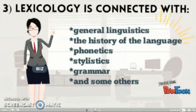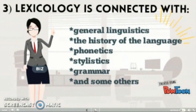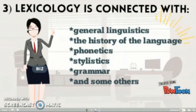If we take as an example any simple word, for example the word 'desk': from the point of view of phonetics, the word 'desk' has some sounds, so it is related to phonetics. From the point of view of grammar, it is a noun and it is a countable noun. From the point of view of stylistics, it doesn't have any stylistic coloring, but maybe in some fiction it can have stylistic coloring. And general linguistics — of course it is related, because it is a word and it is part of the language vocabulary.